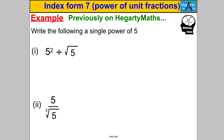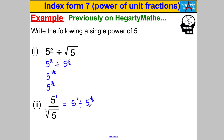Finally, let's practise division. Write these as single powers of five. Five squared divided by the square root of five: that's five to the two, divided by five to the half. When dividing, subtract the powers: five to the two minus a half, which is one and a half, or five to the three over two. And five divided by the cube root of five: five to the one divided by five to the third — subtract the powers — gives five to the one minus a third, which is five to the two thirds. That's it for this video, thanks for watching.